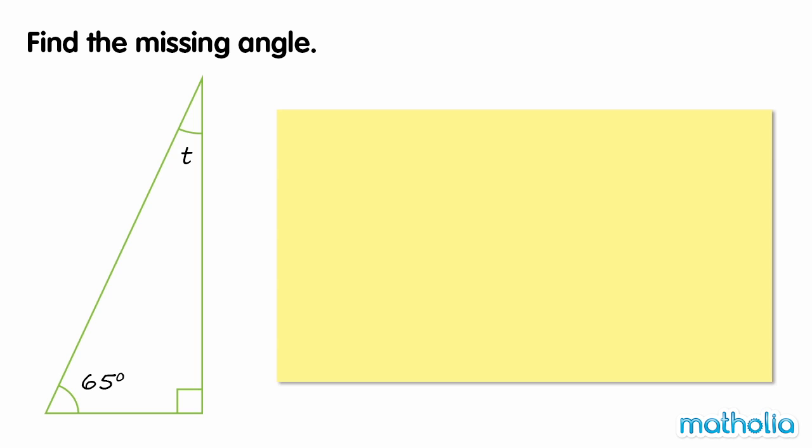Find the missing angle. There are two known angles in this triangle: 65 degrees and the right angle, which is 90 degrees. We need to find angle T.